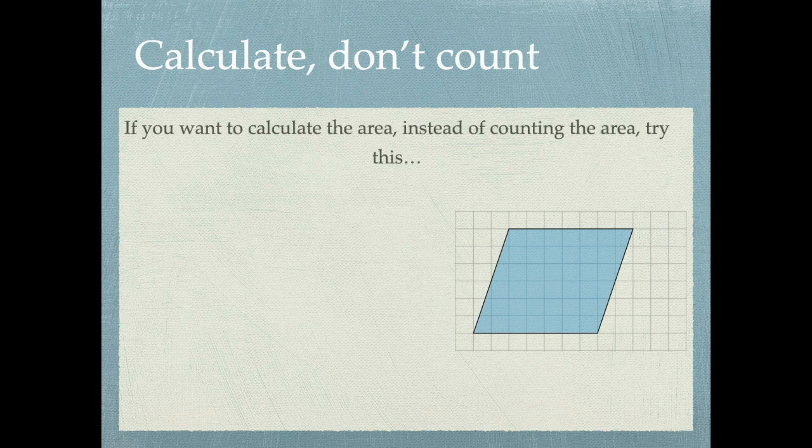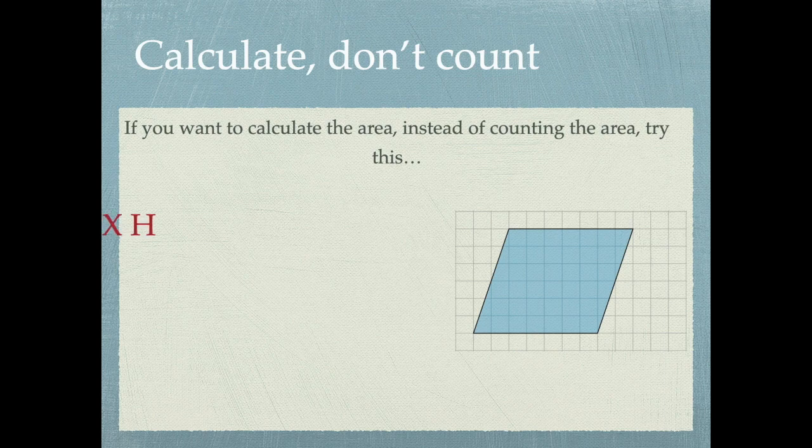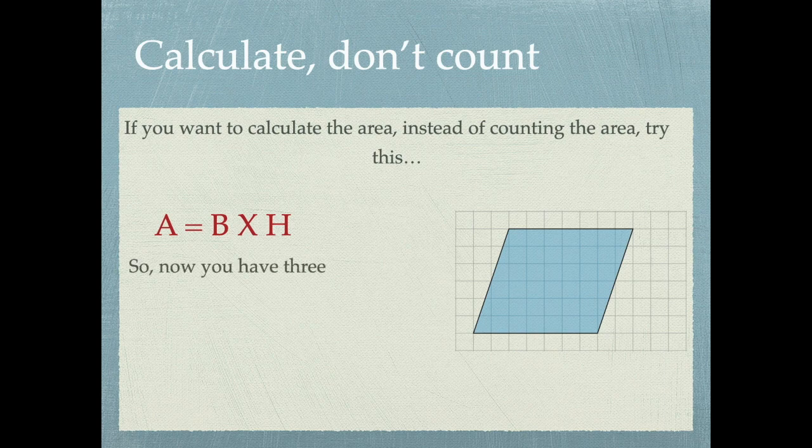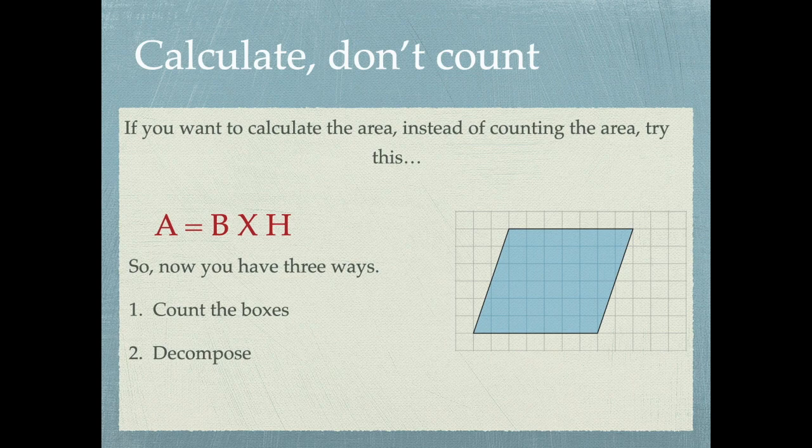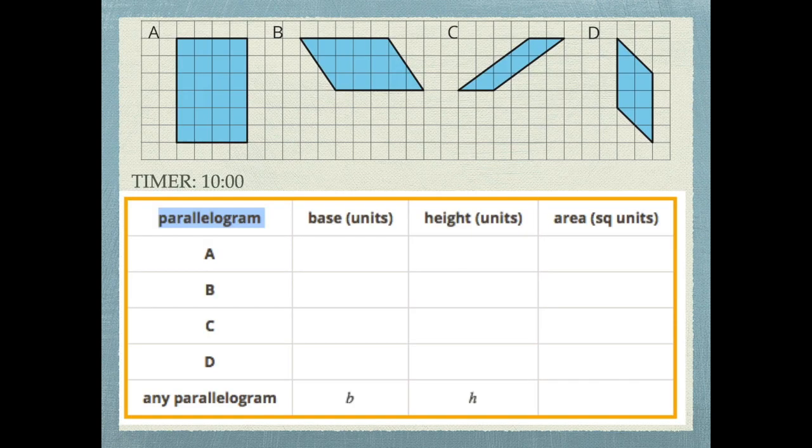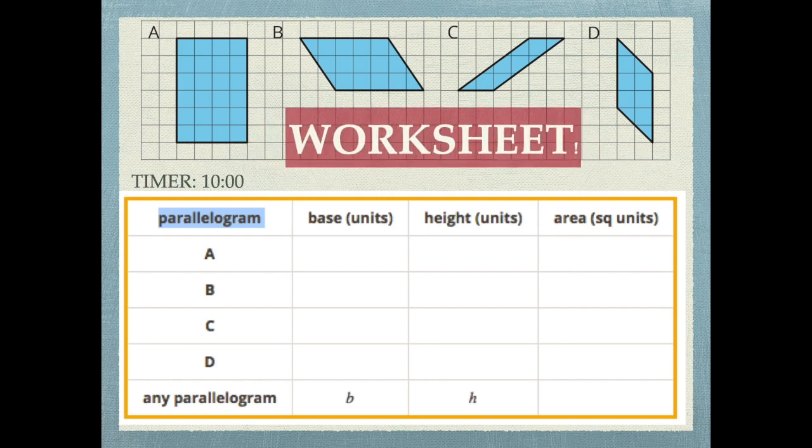All right, so let's review real quick. If you want to calculate the area, instead of counting the area, try multiplying base and the height to get the area. Now you actually have three methods to do it. You could count the boxes, you could decompose the polygon, or you could multiply the base and the height in a parallelogram. You have this worksheet in front of you. It should take you less than 10 minutes to do it. So take this one out and I want you to calculate the base, the height, and the area.